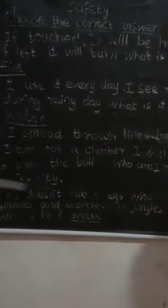Third one. I spread throw lines but I am not a climber. I help to blow the bulbs. Who am I? Answer: electricity.